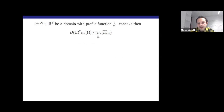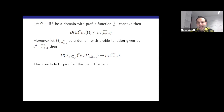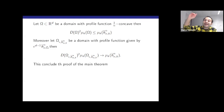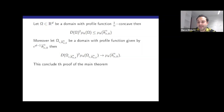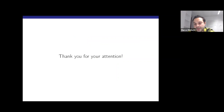We have this inequality, and now we explicitly know the value on the right-hand side. We can construct the collapsing sequence that saturates the inequality by taking a domain omega whose profile function is the maximizer of the Sturm–Liouville problem multiplied by a suitable power of epsilon. This converges to the maximum of the Sturm–Liouville problem, proving the sharp upper bounds and also their sharpness because we can explicitly construct a maximizing sequence that reaches the upper bound. That is all I wanted to say — thank you for your attention.